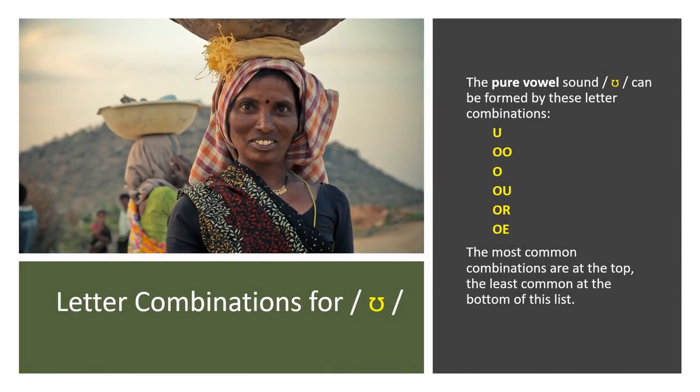The pure vowel sound can be formed by these letter combinations: U, double O, O, OU, O-R, and O-E. The most common combinations are at the top, and the least common are at the bottom of this list.